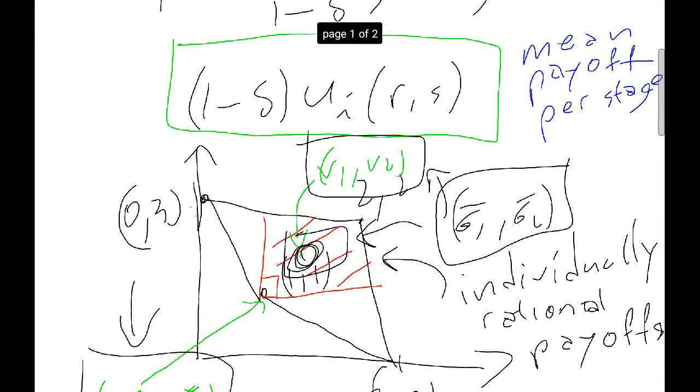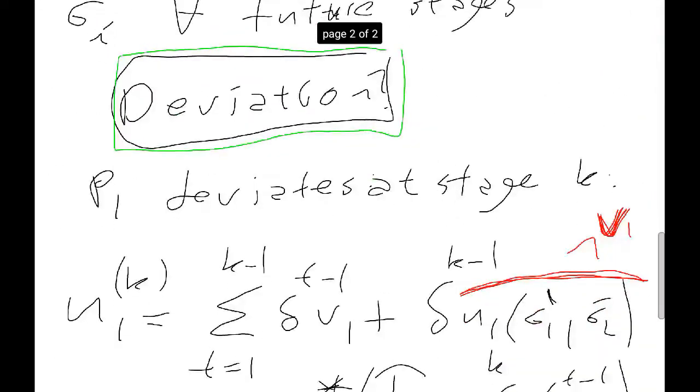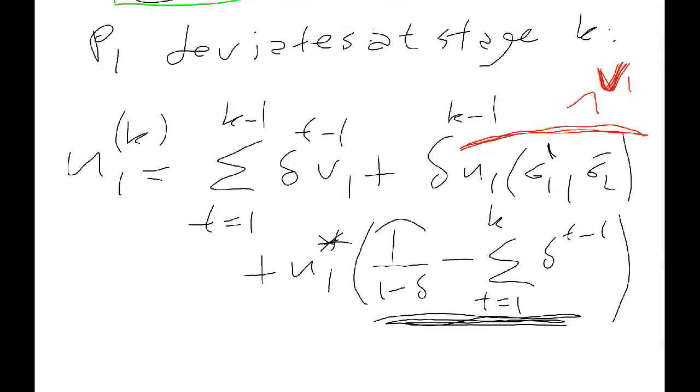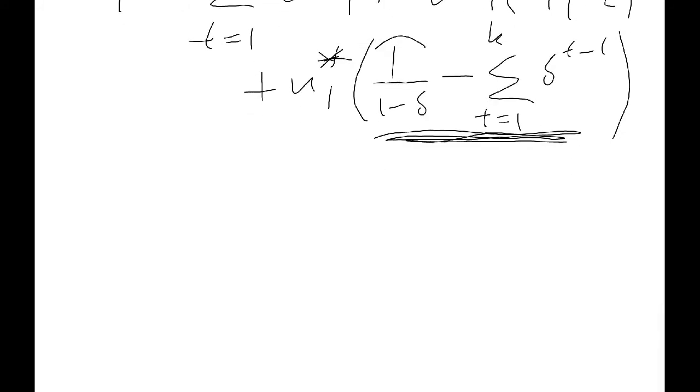This point v1 here. So, at some point, player 1 has gone, well, actually, I want to do better. And so, he or she has deviated. So, it makes sense that that number would be bigger than v1. Now, if we were to look at this, because of discounting, the deviation that makes the most sense is to deviate in first scroll. So, let's make a note of that. Deviate in first stage makes most sense.